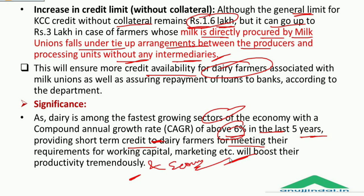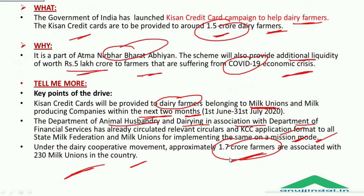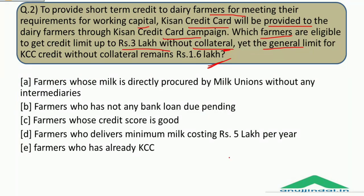So the answer to question 2 is: those farmers are eligible whose milk is directly procured by milk unions without any intermediaries. The correct answer is option A — farmers whose milk is directly procured by milk unions without any intermediaries.